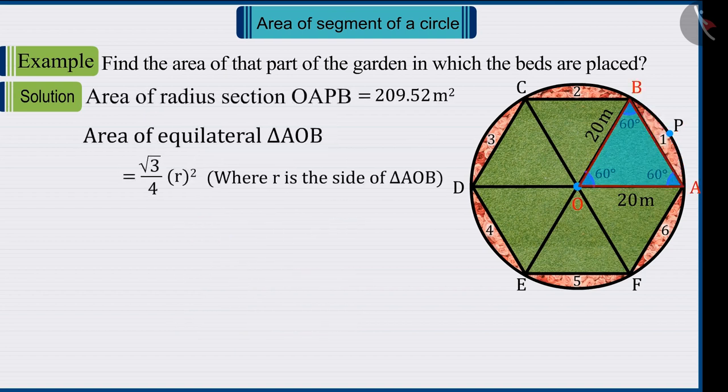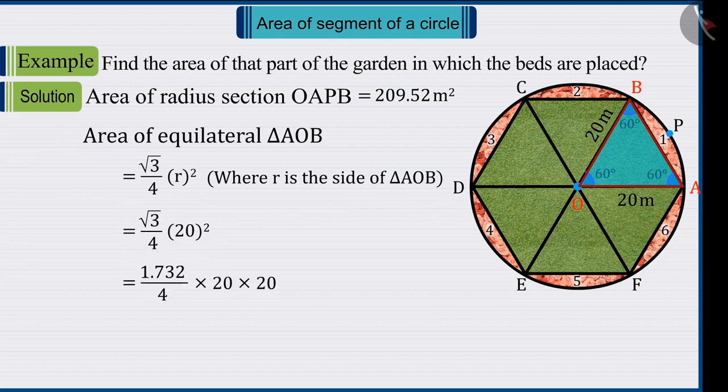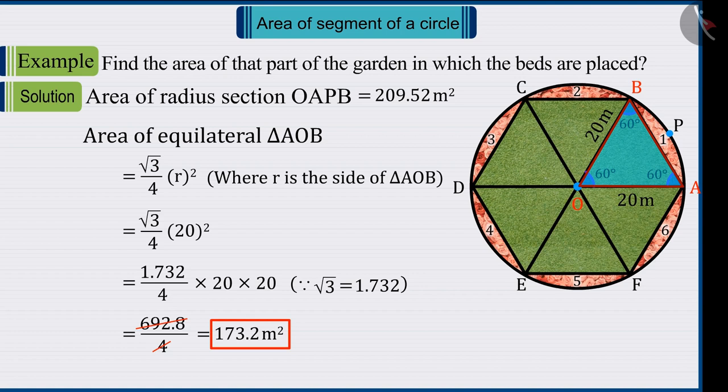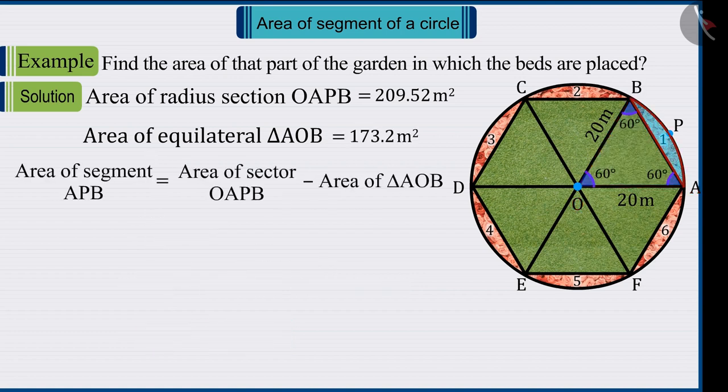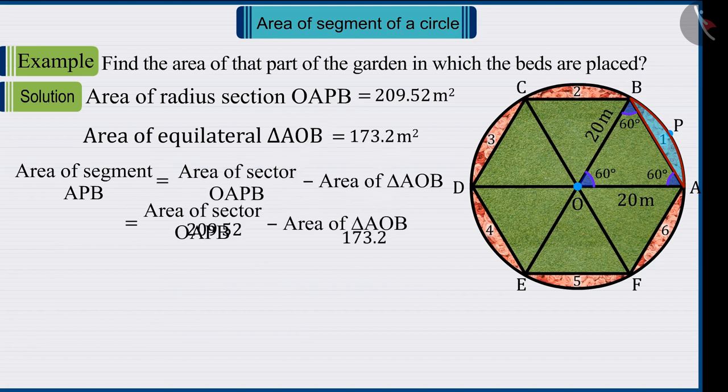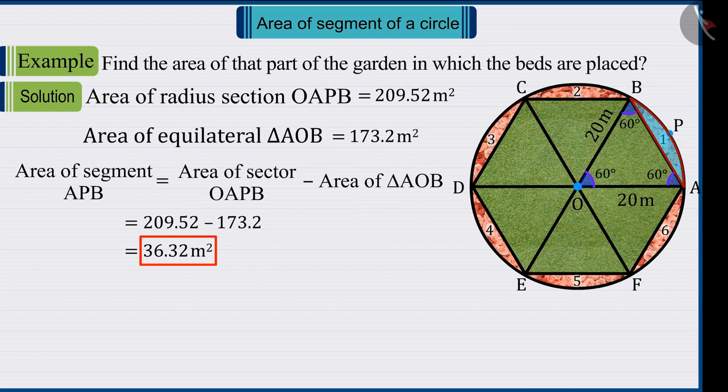While the area of the equilateral triangle putting the value of the sides as 20 gives the value of triangle AOB as 173.2 square meters. On solving which, the area of the segment APB is 36.32 square meters.